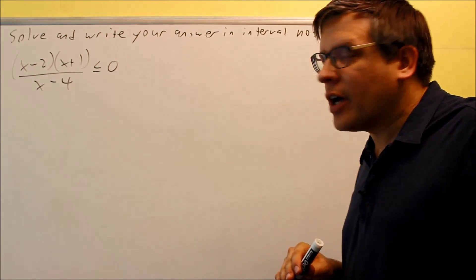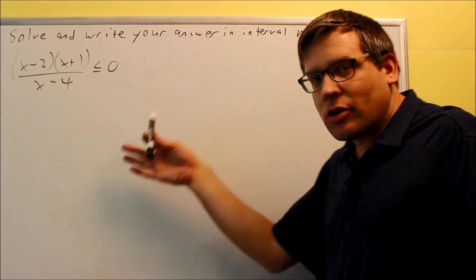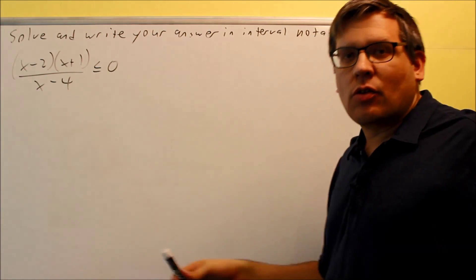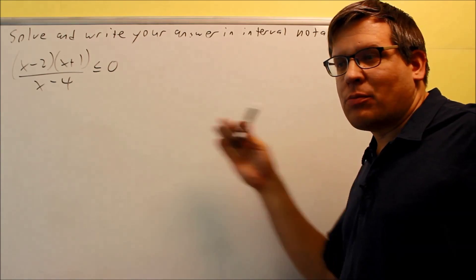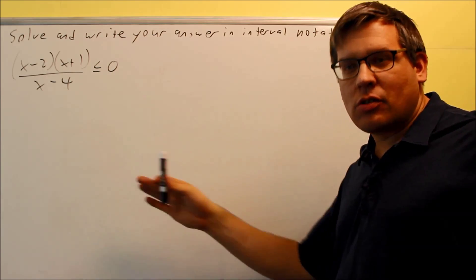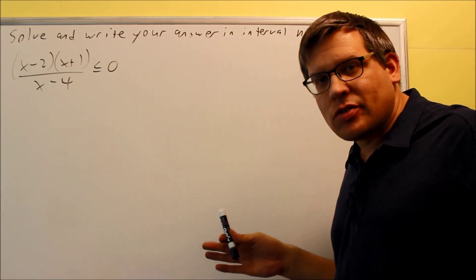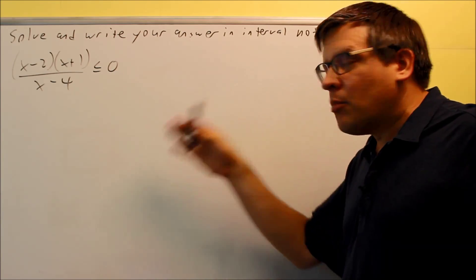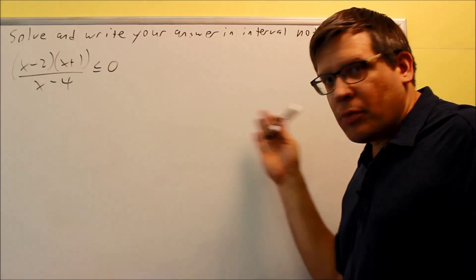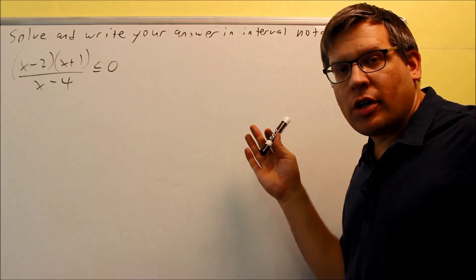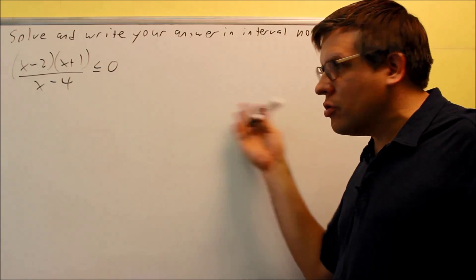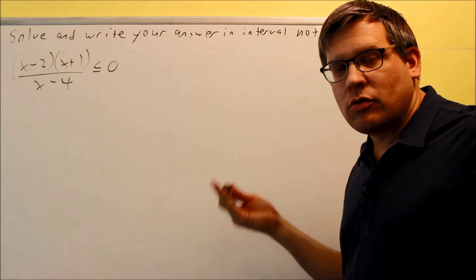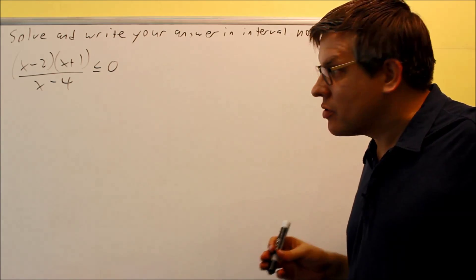We have two different ways of doing that — either by the table method or the number line. You can pick either method, whatever one is easiest for you. I'll show both methods so you can choose whichever one you feel is easiest.